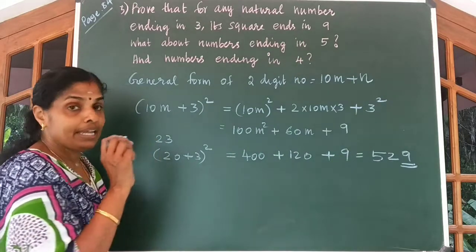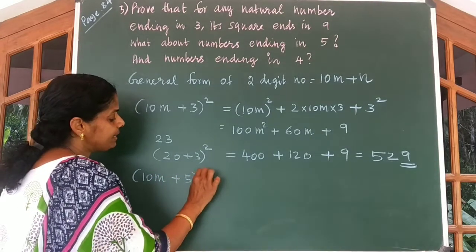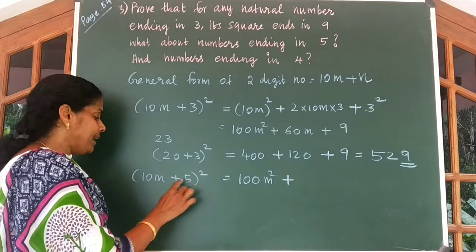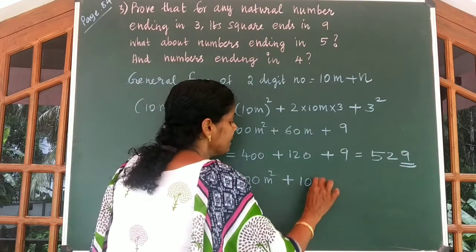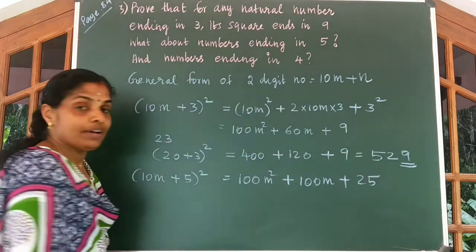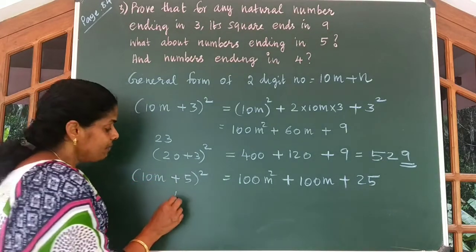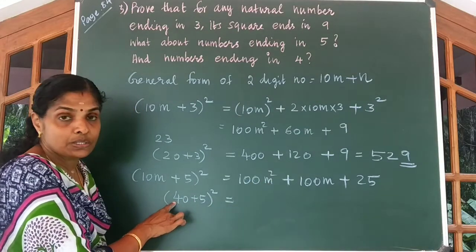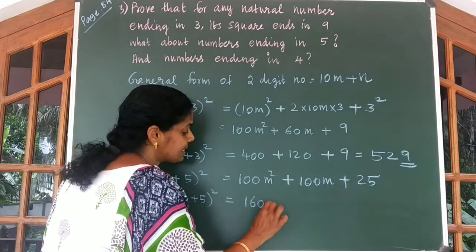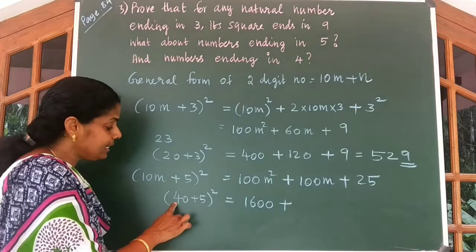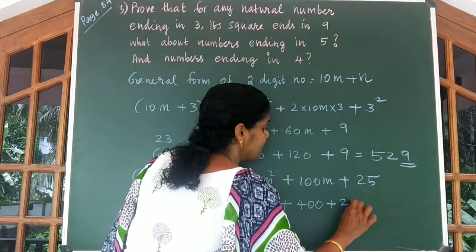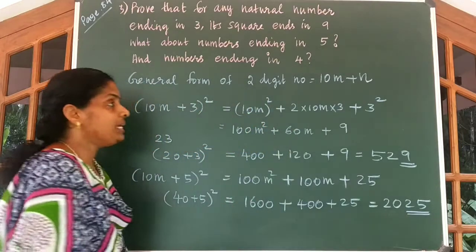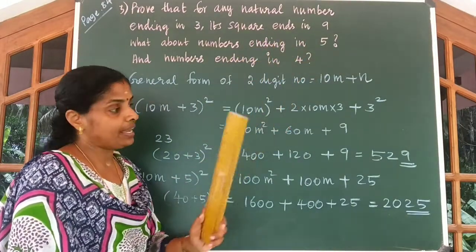Let us consider the case of numbers ending in 5. A number ending in 5 can be written as (10m plus 5) the whole square. Its expansion equals 100m square plus 2 into 5 into 10m plus 5 square, giving 100m square plus 100m plus 25. Let us take the example of 45 square, written as (40 plus 5) the whole square: 40 square is 1600, plus 2 into 5 into 40 equals 400, plus 5 square is 25, so the answer is 2025. If a number ends in 5, its square ends with 25.